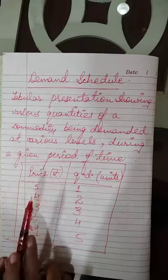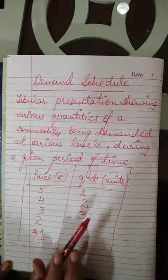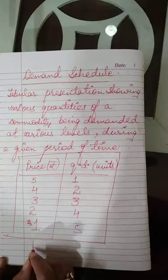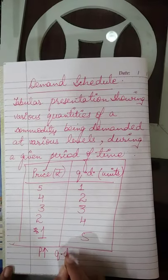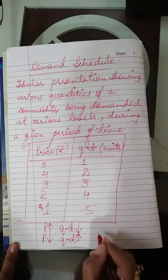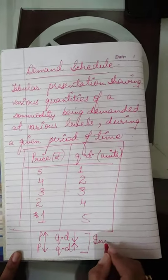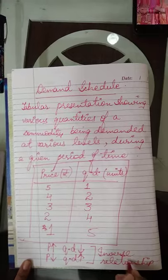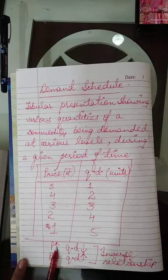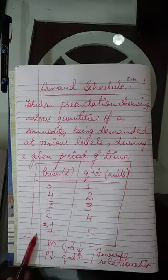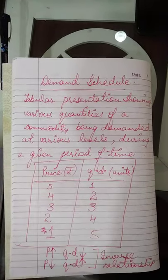जब price यह था तो demand यह थी; जब price कम हो गया demand बढ़ गई; क्योंकि जैसे जैसे commodity का price बढ़ता है demand कम होती है, और जैसे जैसे price कम होता है demand बढ़ती है। So this is an inverse relationship between price and quantity demanded — यह tabular form में, मतलब एक table में present करना — that is demand schedule।